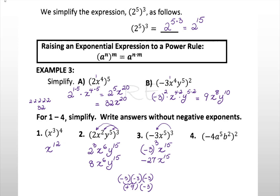For problem 4, we distribute the exponent 2 over (-4a⁸b²). Negative 4 to the 2nd is 16, a to the 8 times 2 gives a to the 10th, and b squared raised to the 2nd power becomes b to the 4th. So the result is 16a to the 10th, b to the 4th.